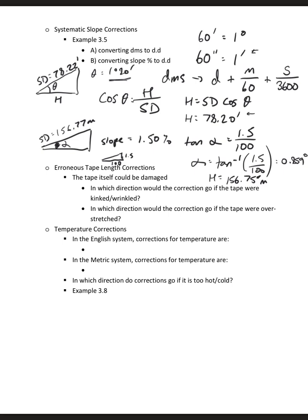So that's a systematic slope correction. Within that, we talked about converting degrees minutes seconds to decimal degrees as well as the slope percent to decimal degrees. Some other corrections: the erroneous tape length correction, the tape itself could be damaged. If you have a tape that should be, we'll do this in red over here, the tape should be flat.